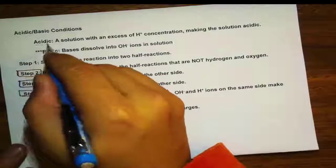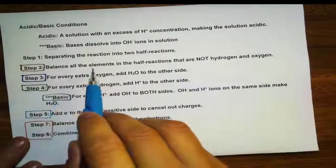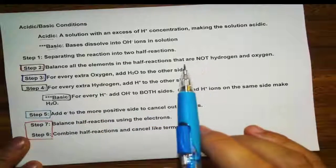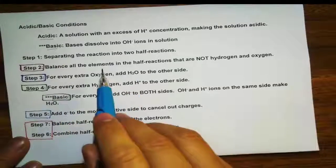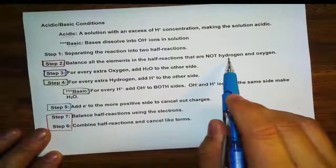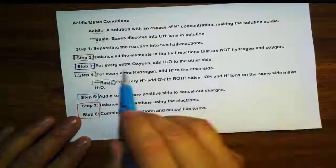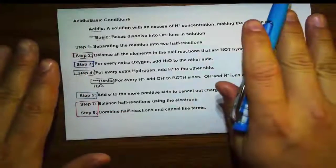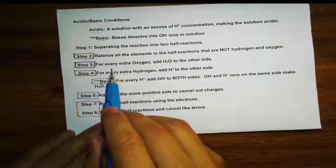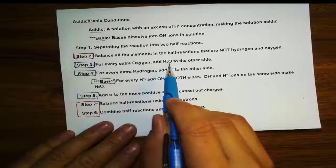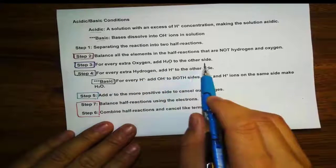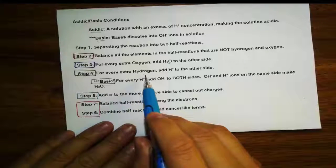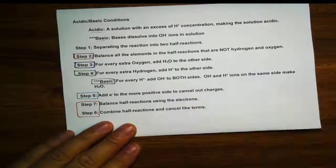Now let's focus on the acidic solution. In step 2, that's where we see the changes — we balance the elements first, not the electrons, and we are only looking at elements that are not hydrogen and oxygen. In steps 3 and 4, for every extra oxygen on one side compared to the other, you add water to the side with fewer oxygens. Then for extra hydrogen, you add H⁺ to the side with fewer hydrogens.